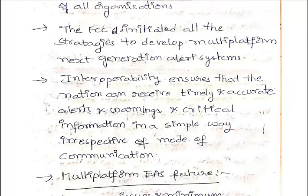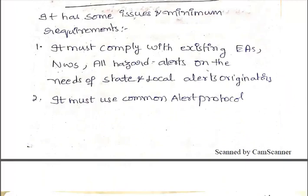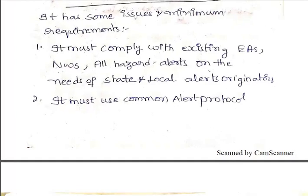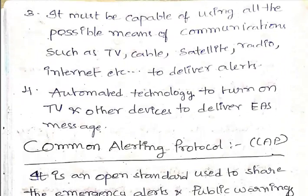Let us discuss the future of this multi-platform Emergency Alert System. It has some issues and minimum requirements that must be followed. The system must comply with the existing Emergency Alert System, the National Warning System, and all-hazard alerts on the needs of state and local alert originators. It must also use a common alert protocol for the transmission of alerts.